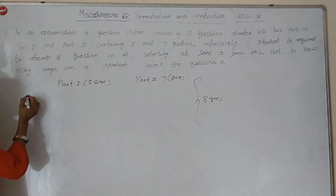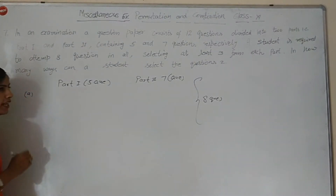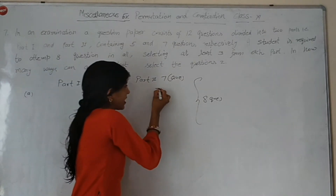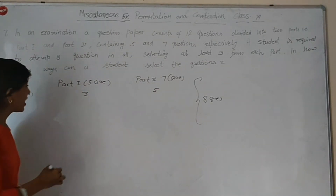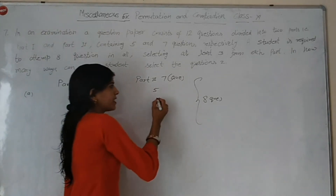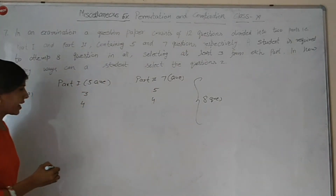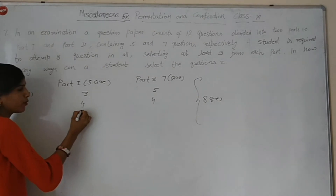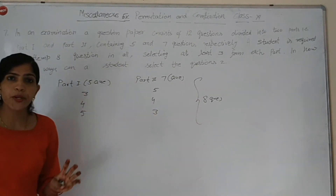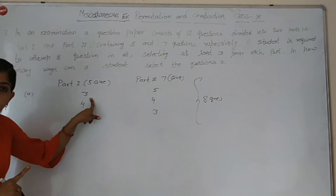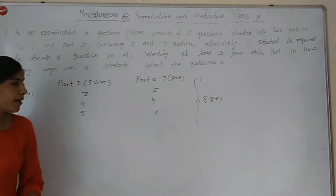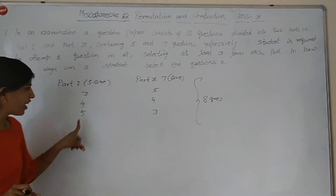Humare paas 12 questions hain, unme se 8 select karne hain, aur kam se kam 3 har part mein hone chahiye. Toh hum lete hain cases: Part A ke 3 liye toh Part B ke 5 rahenge. Agar 4 leti hoon toh Part B ke 4 rahenge. Agar 5 longi toh Part B ke 3 rahenge. 8 tabhi banenge na? At least 3 bola hai.